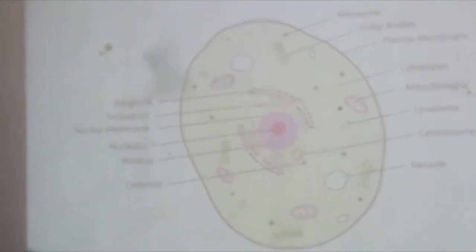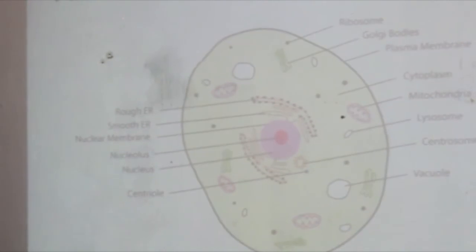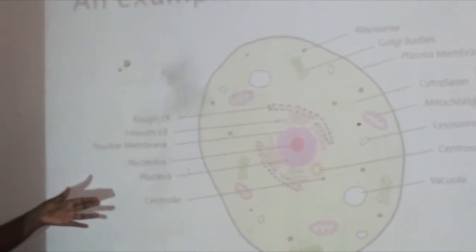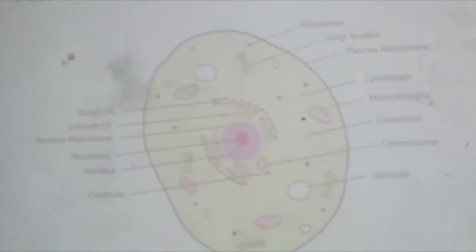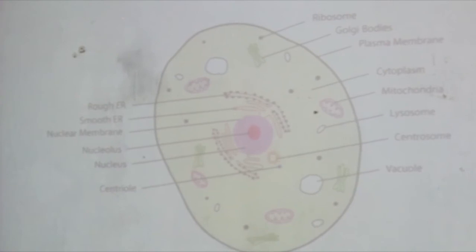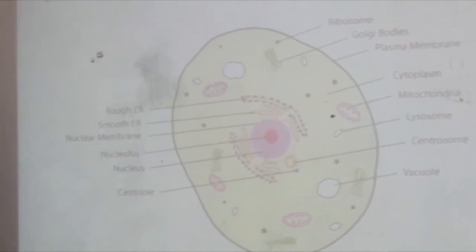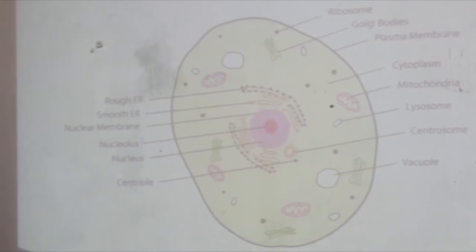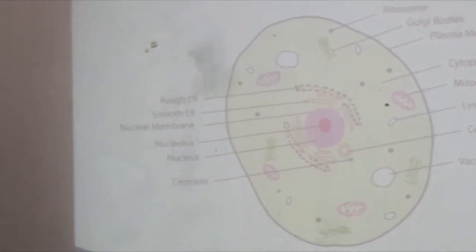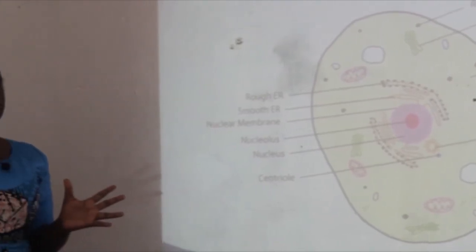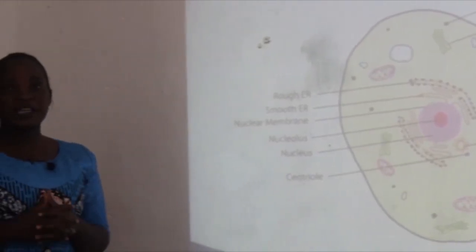This is an example of a eukaryotic cell with different components. The first one is ribosomes — ribosomes are the site of protein synthesis. Then there are Golgi bodies, which contain structures called the Golgi apparatus. The Golgi apparatus is called the cell delivery system because it transports materials from one part of the cell to another.